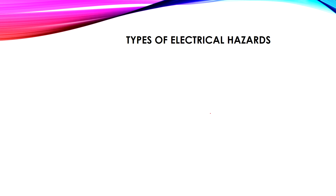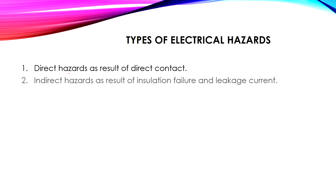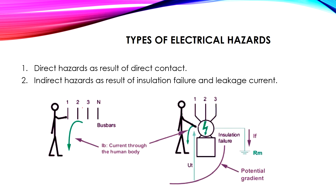There are two types of electric hazards that humans are exposed to. The first is direct hazards, which result from direct contact with live parts. For example, if a human touches a bus bar — phase one, two, three (red, yellow, blue), or the neutral — the current flows through the human to the ground. This is called a direct electric shock.